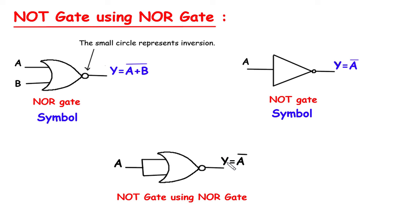We will get the output as Y equals A plus A whole bar, which is same as A bar. So this is how we can make NOT gate using NOR gate.